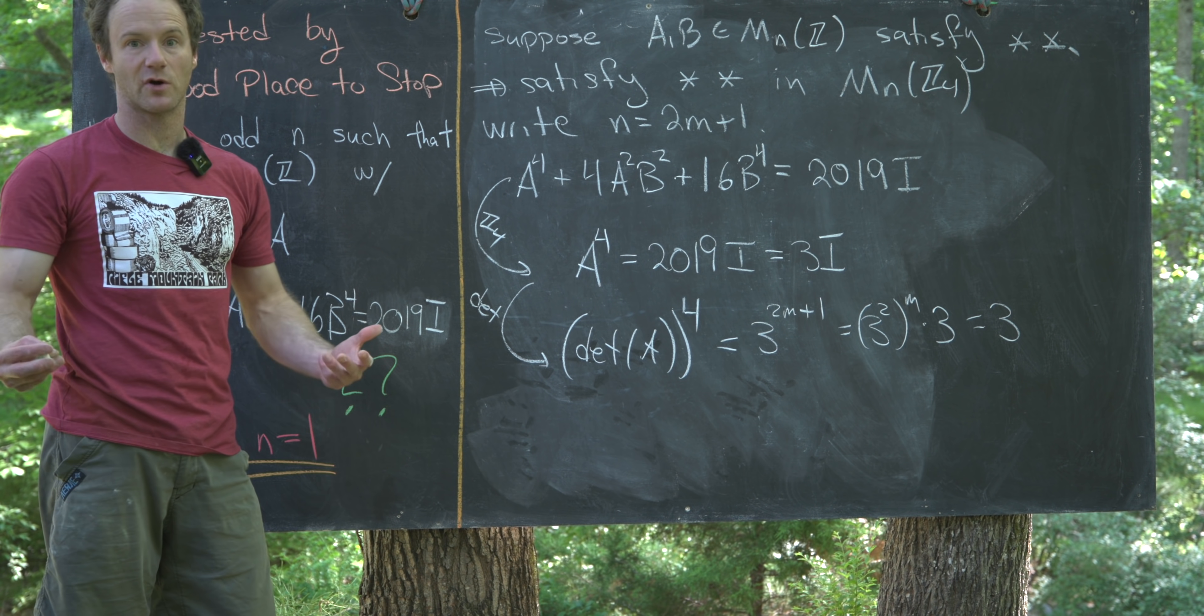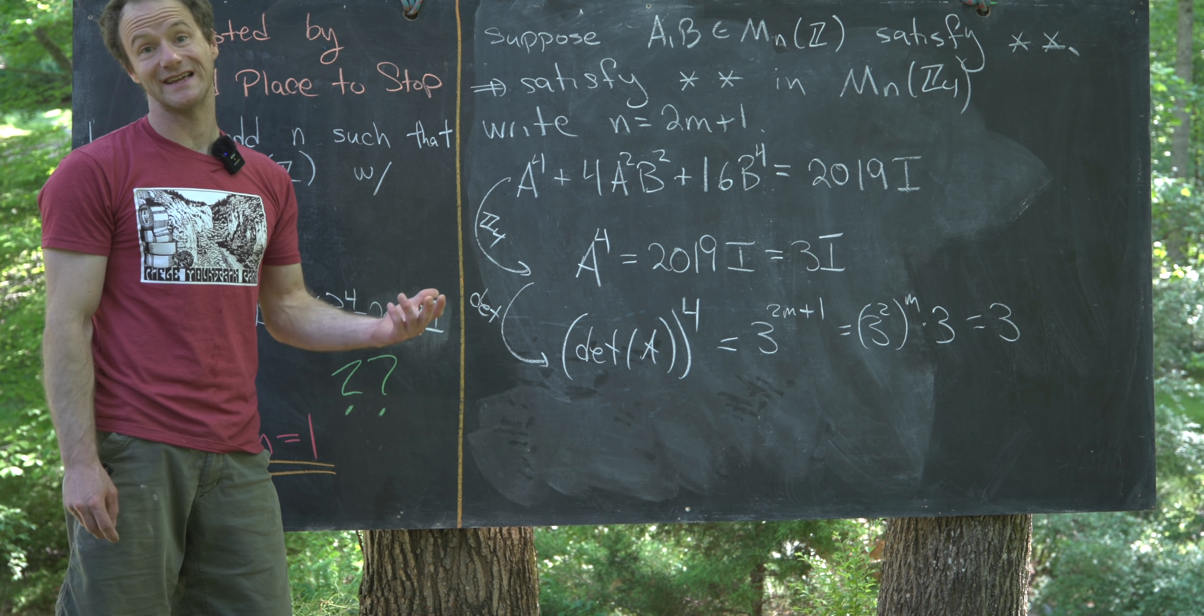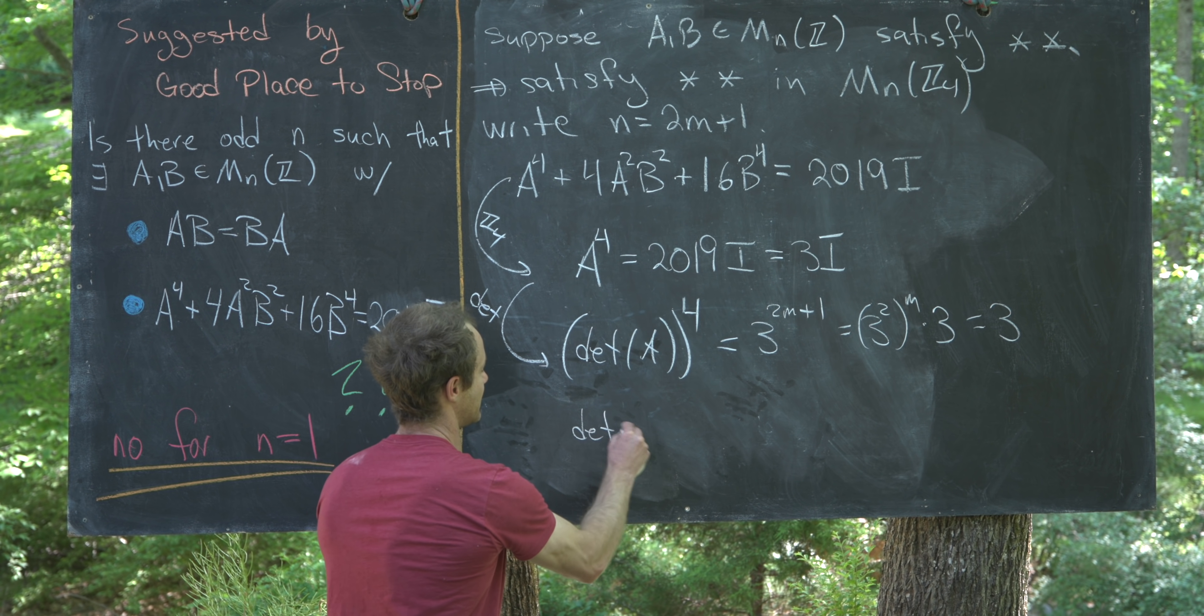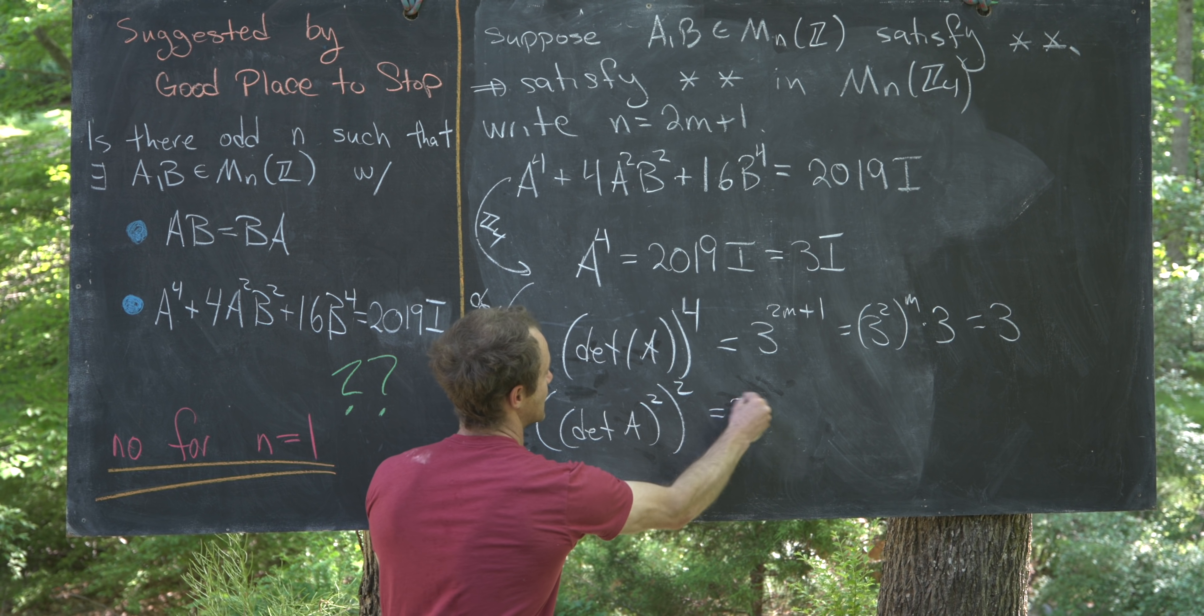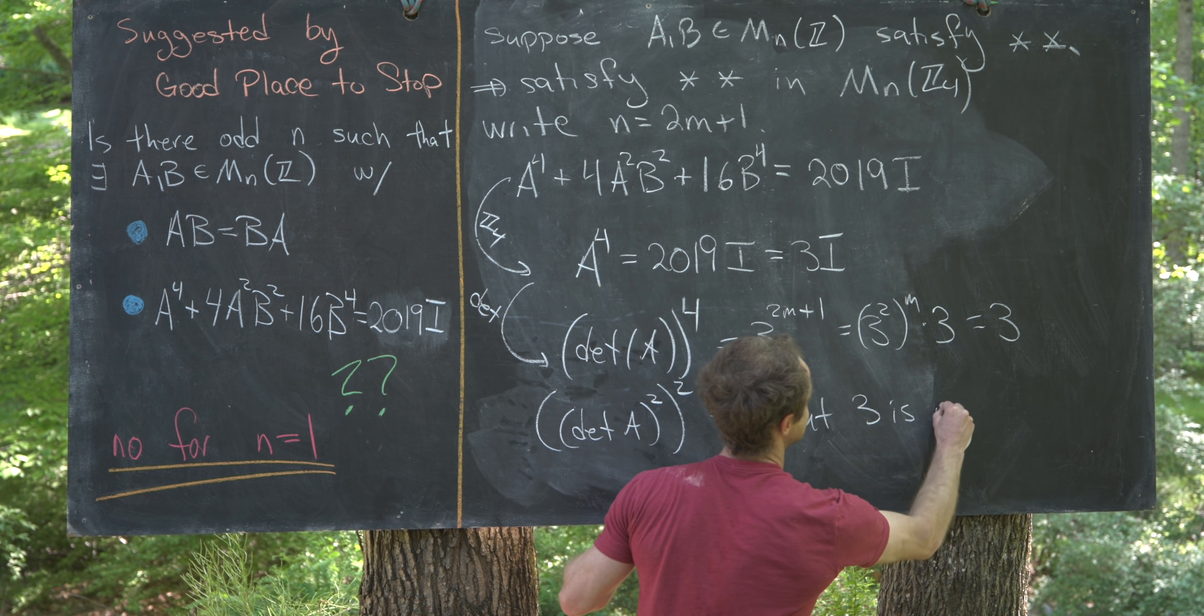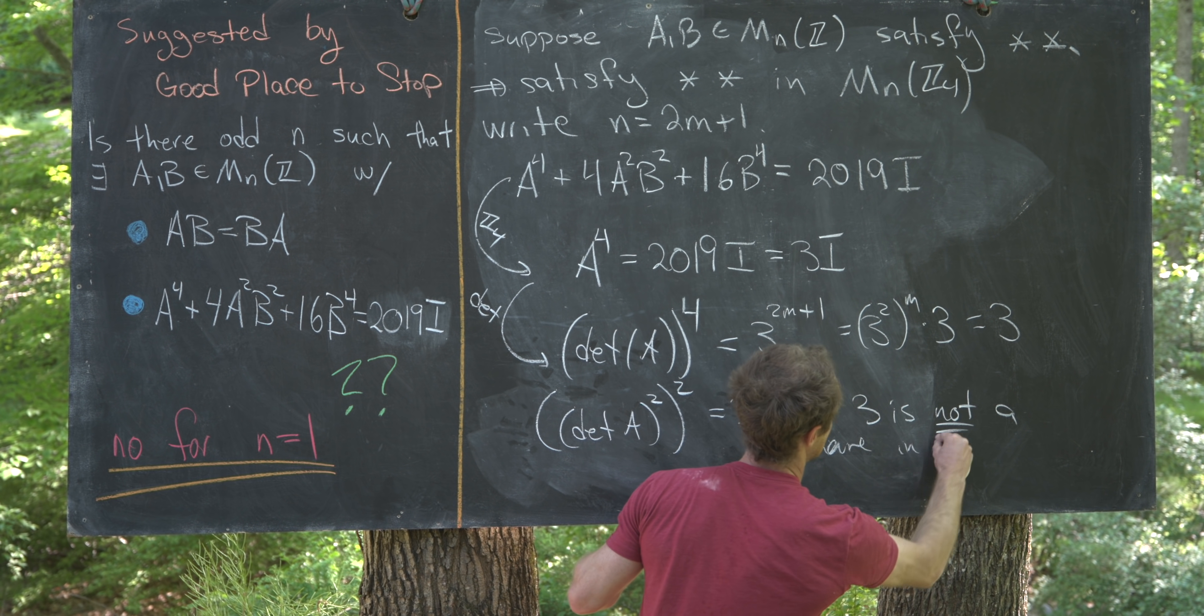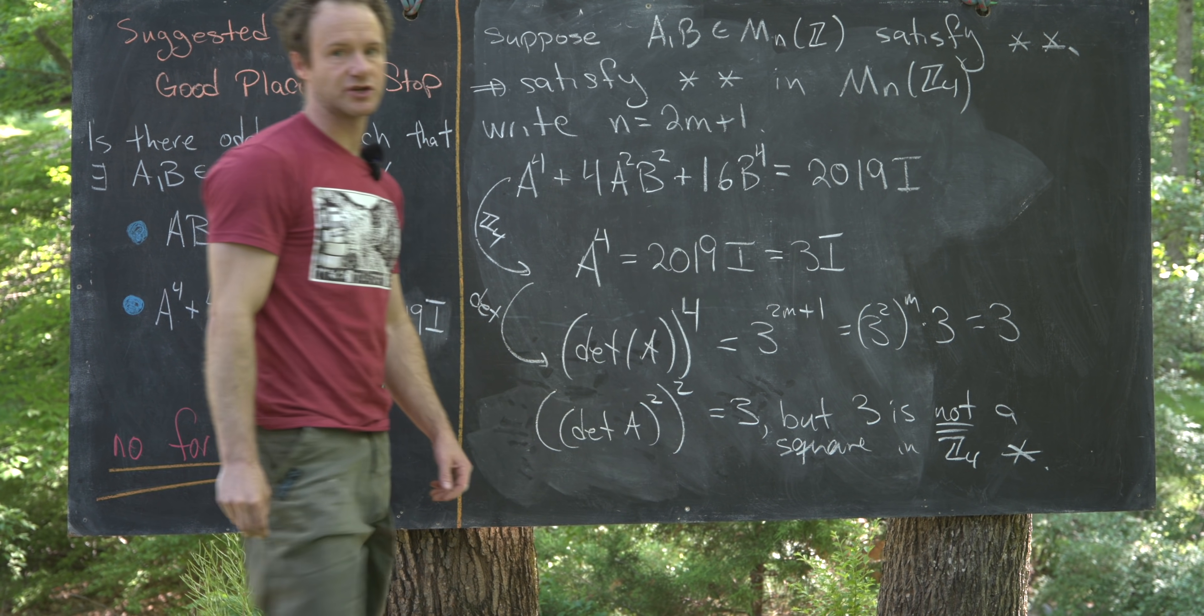And now, we can make essentially the same argument that we made on the last board. We can see that this is a perfect 4th power, which itself is a perfect square. Notice we have the determinant of A squared squared equals 3, but 3 is not a square in Z4, and so we've arrived at our contradiction.